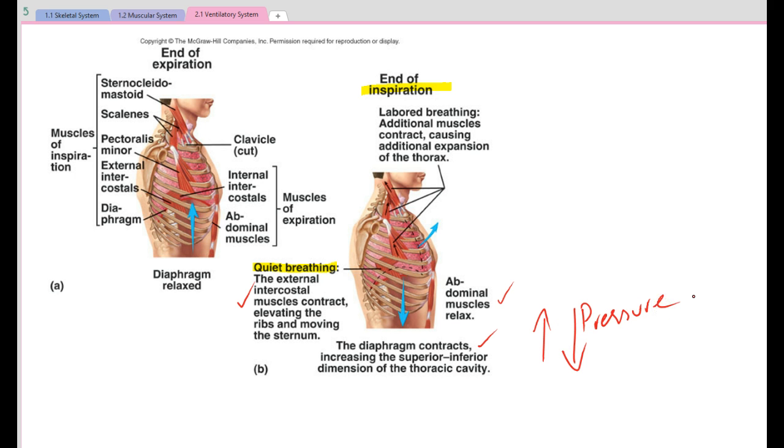Now that creates a difference in pressure gradient. So the pressure in the atmosphere is much greater than what is in the thoracic cavity. Therefore, the air will rush down in and fill our lungs.